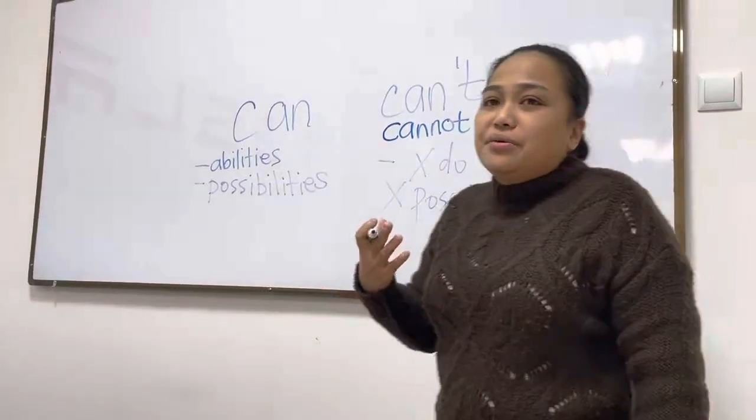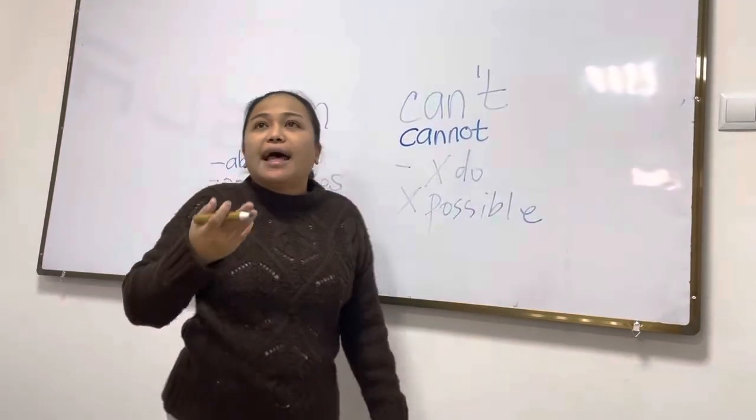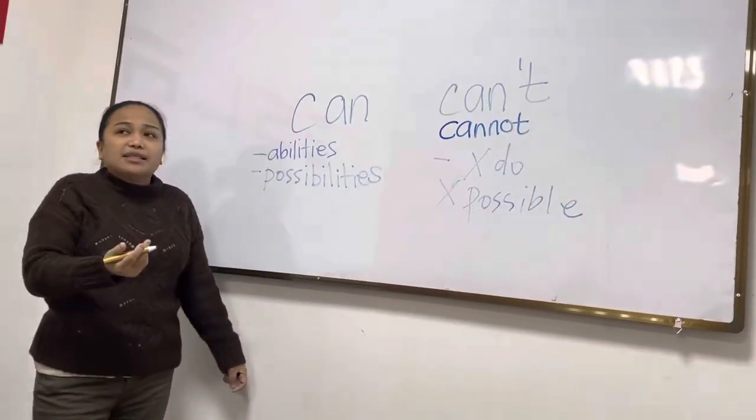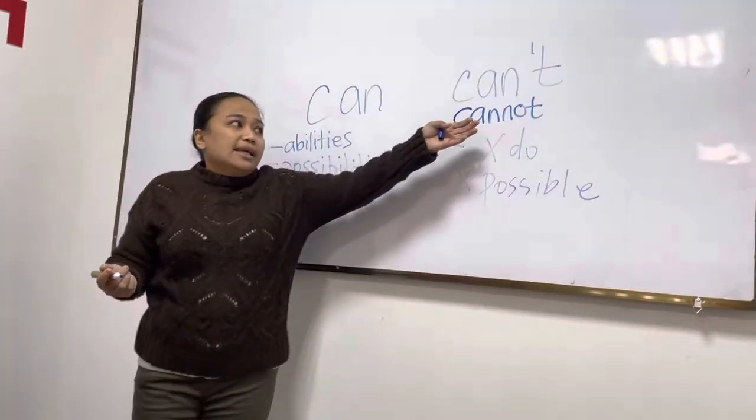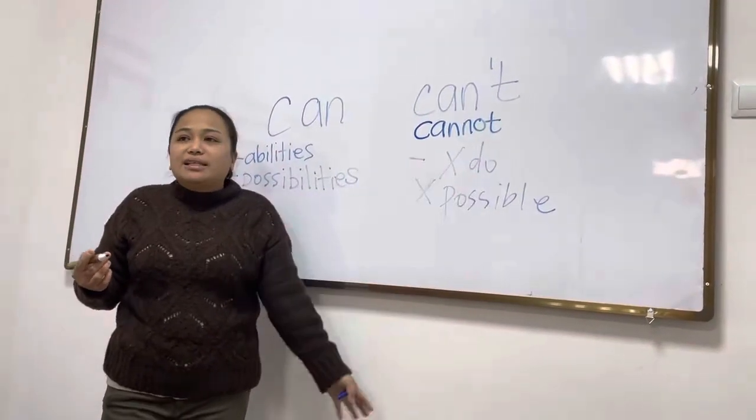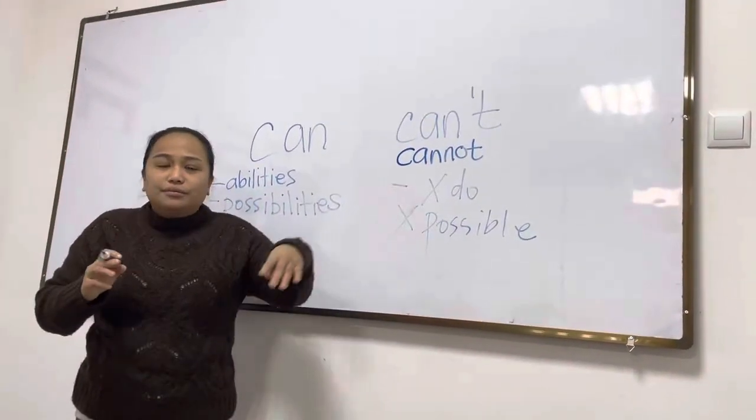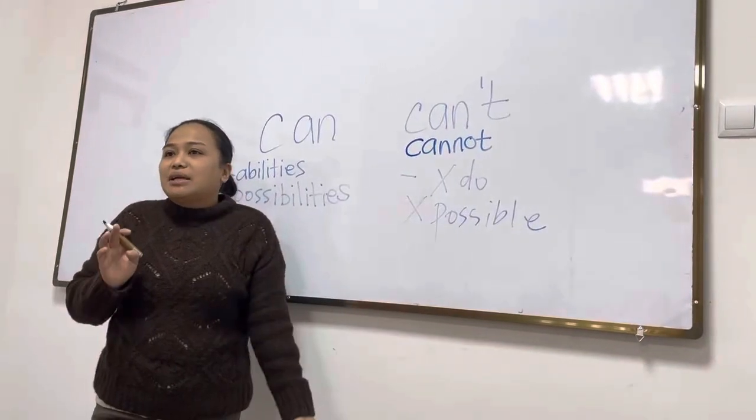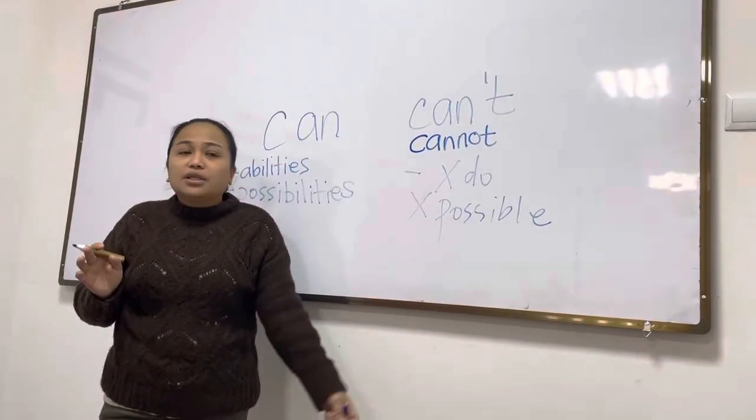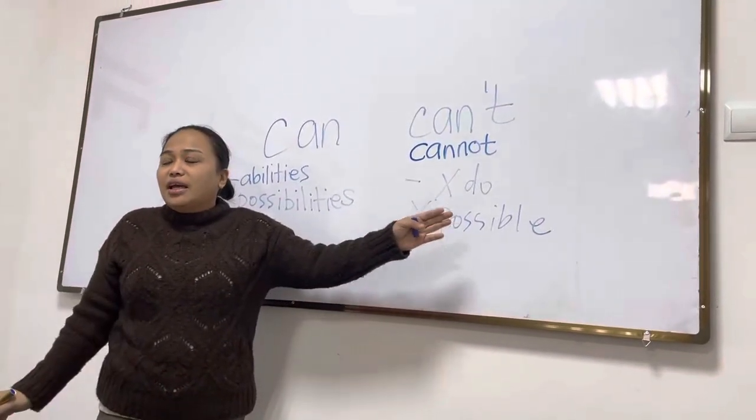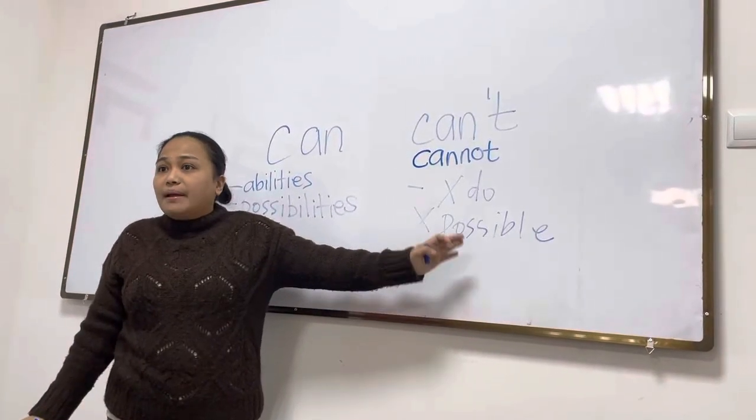Again, we use can for abilities, for talents, for skills, for possibilities. While cannot or can't, we use it for the things that we cannot do and for the things that are impossible. For example, no mungkin inkomiat nadorev. Example.